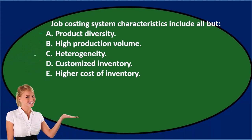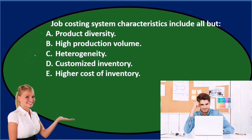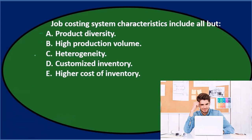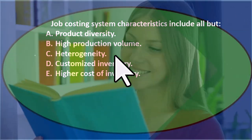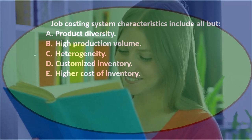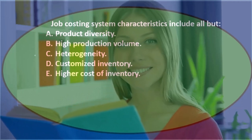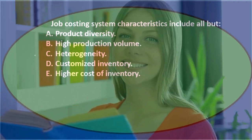Option C is heterogeneity, which means difference — they're going to have different types of characteristics within the inventory. This contrasts with homogeneity, meaning the same. Textbooks sometimes use both terms. Heterogeneity means products are different in nature, which is typically the case for a job cost system because we have different types of inventory.